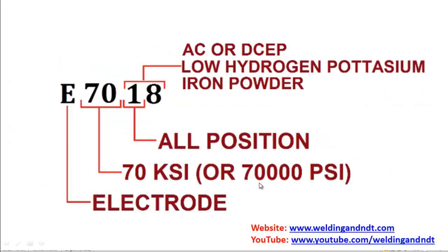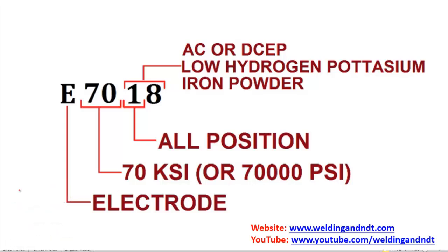See how it is done. For example, you have E7018. First of all there is an 'E'. E stands for electrode — it shows that it is an arc welding electrode.